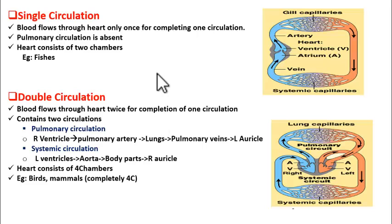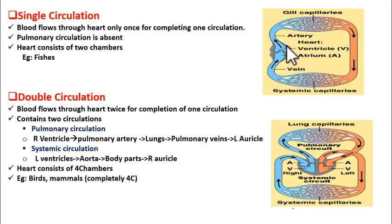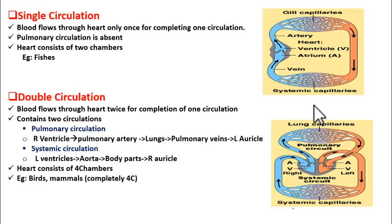Now, what are the differences? In single circulation, blood flows through the heart only once in completing one circulation; in double circulation, twice. In double circulation, we find two circulations — pulmonary and systemic. In single circulation, there is no pulmonary circulation because lungs are absent. In single circulation, the heart consists of two chambers; in double circulation, the heart consists of four chambers. Double circulation is the more efficient one because there is a clear-cut separation between oxygenated blood and deoxygenated blood.